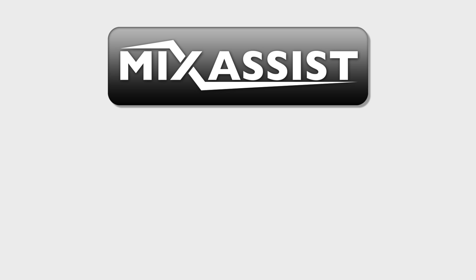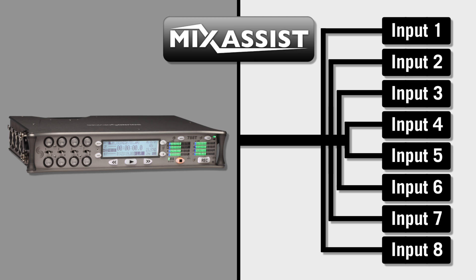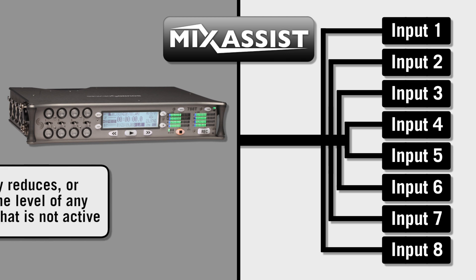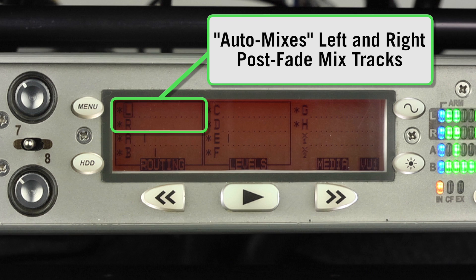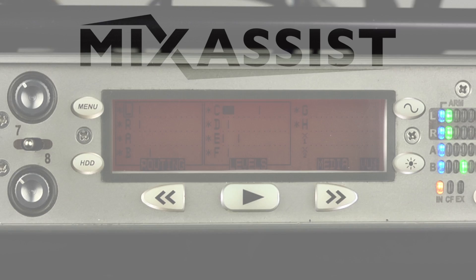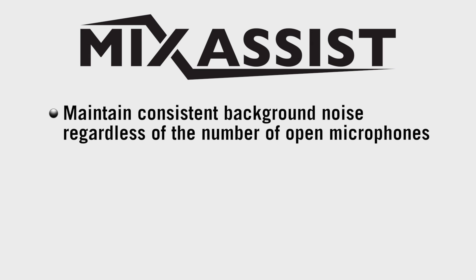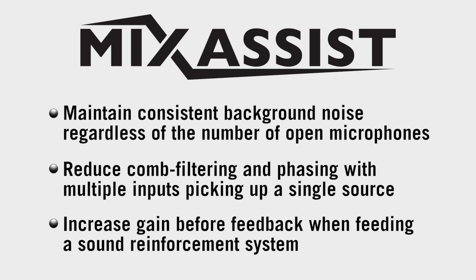Mix Assist is a powerful feature of the 788T, which gives tools to improve a mix when using multiple microphones. It does this by automatically reducing or attenuating the level of any microphone that is not active. Mix Assist auto-mixes the post-fade tracks while not affecting the pre-fade isolated tracks. The goals of Mix Assist are to maintain consistent background noise regardless of the number of open microphones, to reduce comb filtering and phasing with multiple microphones picking up a single source, and to increase gain before feedback if the recorder is feeding a sound reinforcement system.